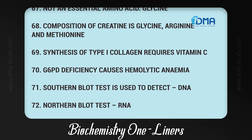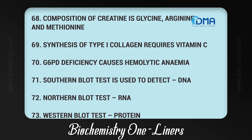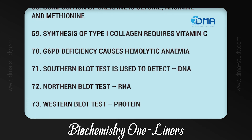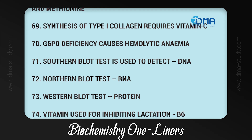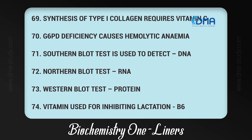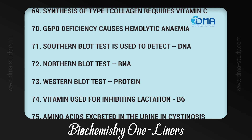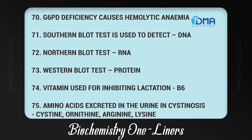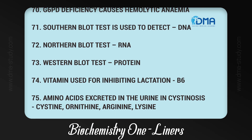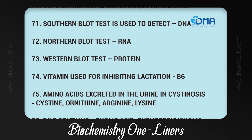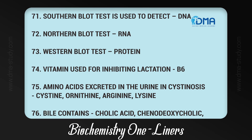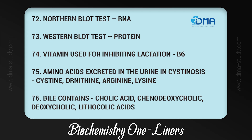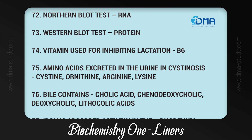71. Southern blot test is used to detect DNA. 72. Northern blot test detects RNA. 73. Western blot test detects protein. 74. Vitamin used for inhibiting lactation is B6. 75. Amino acids excreted in the urine in cystinosis are cystine, ornithine, arginine, and lysine.